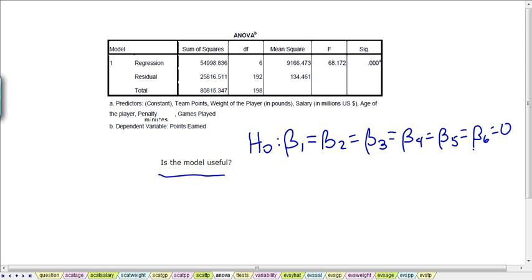None of the variables we've chosen as factors to try and predict the points earned have a relationship with the dependent variable. So our alternative in this overall F test to determine model utility is maybe at least one of these is not zero. So at least one of these coefficient values is not zero.